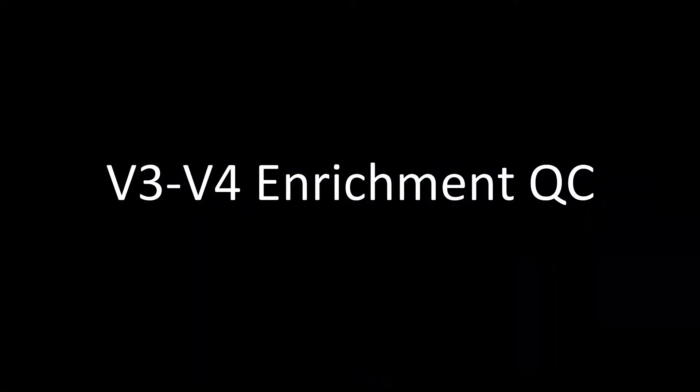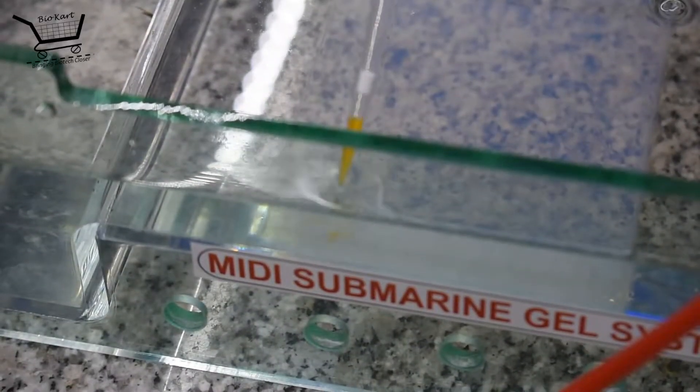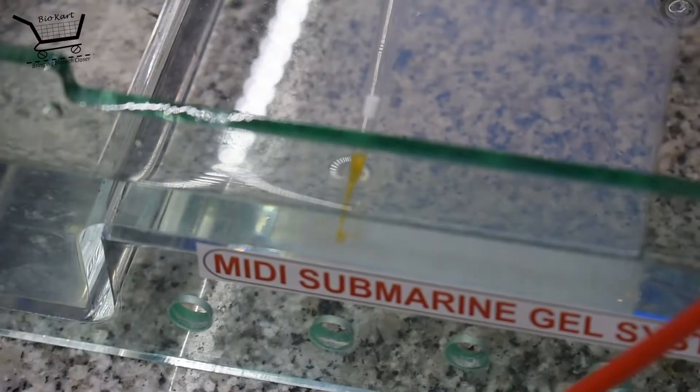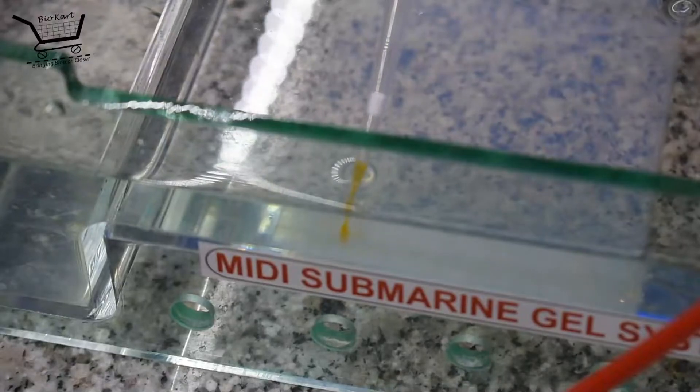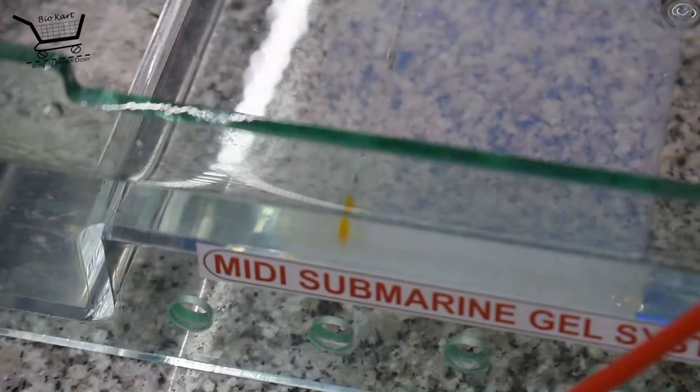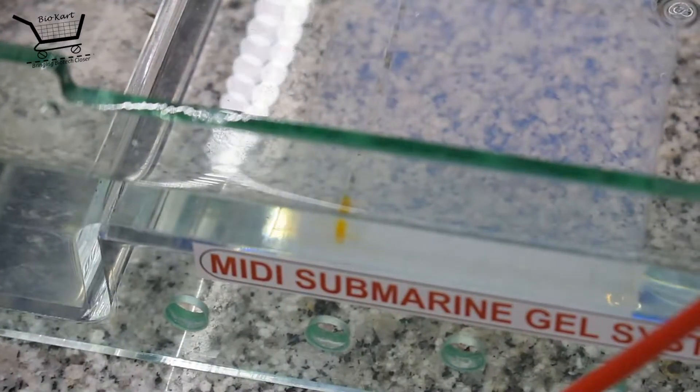Now that the amplification is carried out, we come to a second quality check stage. The PCR amplified products are subjected to a gel QC. 1 mL of the amplified product is loaded into a 2% gel along with a 50 or 100 base pair ladder.